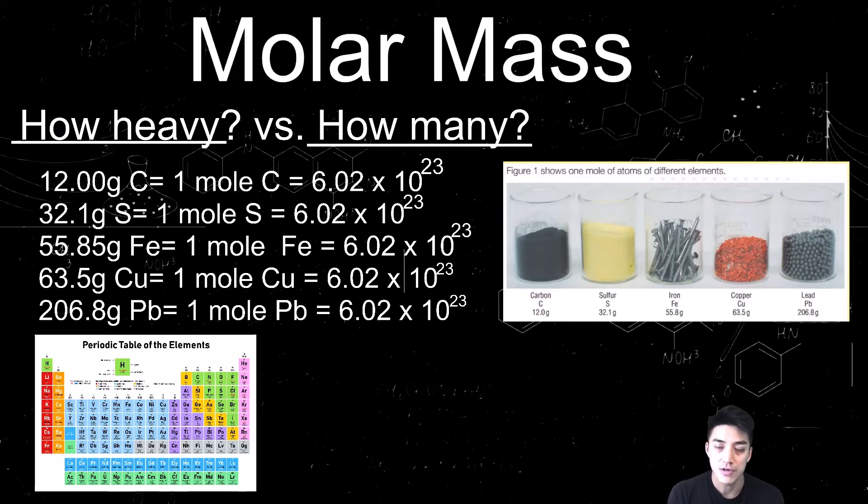If I look at iron, for example, if I have 55.85 grams of iron, that means I have 1 mole of iron, and I have 6.02 times 10 to the 23rd atoms of iron. So it's this idea that we can relate mass to quantity. How heavy is something? 12 grams. How many are there? 6.02 times 10 to the 23rd.